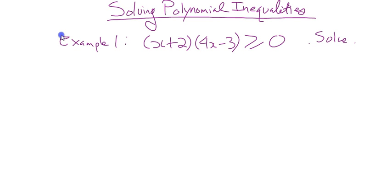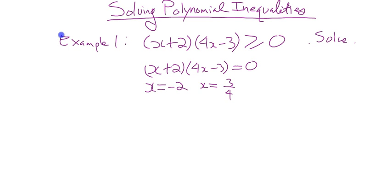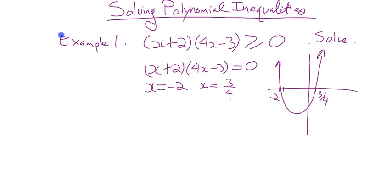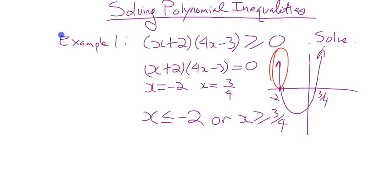We find the zeros. We solve (x + 2)(4x − 3) = 0, which gives x = −2 or x = 3/4. So if I graph this, I have a zero at −2 and one at 3/4. Which way does this thing open? Up. So it looks like a upward parabola with x-intercepts at −2 and 3/4. When is this polynomial greater than or equal to zero? When x ≤ −2 or x ≥ 3/4.